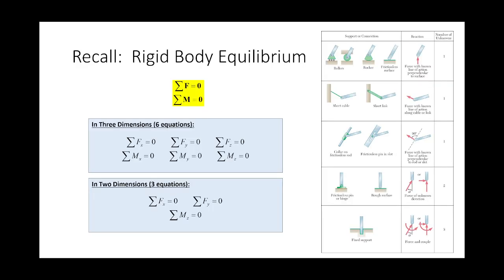Up until now, we've only handled the equilibrium of structures in two dimensions, so we've only had three equations of equilibrium: sum of forces in x, sum of forces in y, and sum of moments. What we found is that it's probably not a bad idea to do sum of moments first — for example, with a simply supported beam with a pin on one end and a roller on the other, you can sum moments about the point where two unknowns intersect to solve for the remaining unknown without needing a full three-equation solver.